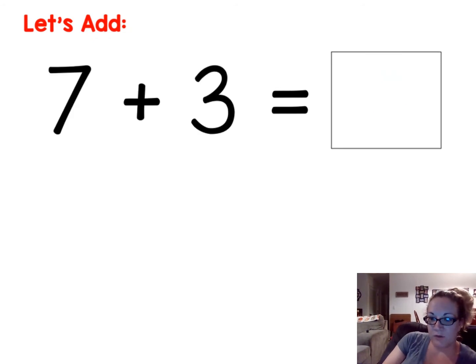All right, let's look at the next one. Seven plus three. I think which number is bigger? Seven. I'm gonna grab it and then I'll count up three more. See if you can do it with me. Ready? Seven. What comes next? Eight, nine, ten. So the sum is ten.